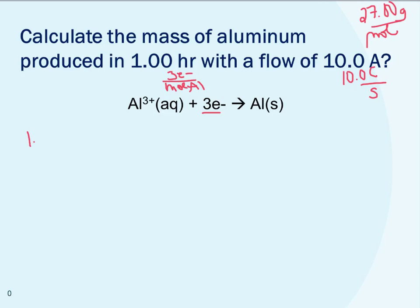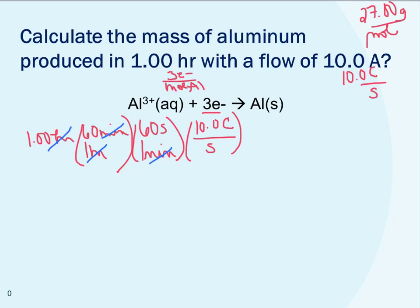So I'm going to start up here with one hour. And then I want to get that to seconds because I see that amps is going to be coulombs per second. So I know that one hour is 60 minutes, and my one minute is 60 seconds. So that gets my time to seconds. And so I can cancel out hours and cancel out minutes. Now I've got seconds there. Now I can use my current there because I have 10 coulombs per second. So now my seconds cancel and now I'm left with coulombs.